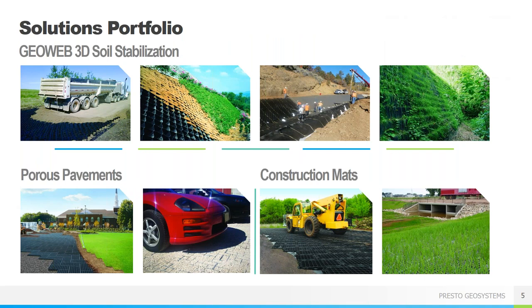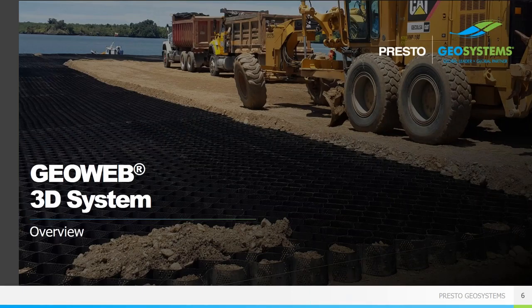We operate in three general product areas: soil stabilization using our GeoWeb geocells, which can be used for load support, slope and channel protection, and constructing green retaining walls; porous pavements, both vegetated and aggregate solutions; and lightweight reusable construction mats. Today we're going to focus on GeoWeb with the main focus being on slope and hydraulic performance, but we'll also cover load support applications briefly.